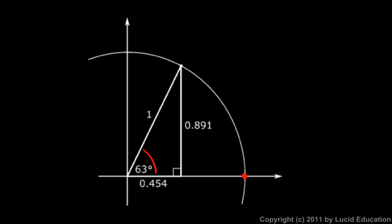So think about the tangent of a 63 degree angle and remember how we defined the tangent function. The tangent is always the opposite divided by the adjacent. So in this case, we have a 63 degree angle. We can say the tangent of 63 degrees is the opposite side, which is 0.891, divided by the adjacent side, which has a length of 0.454.